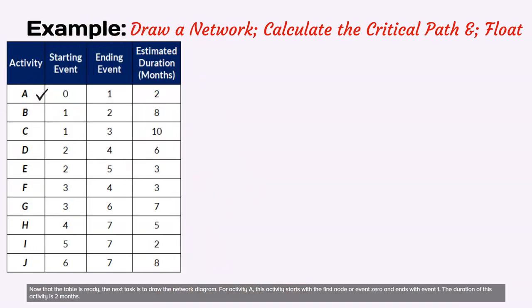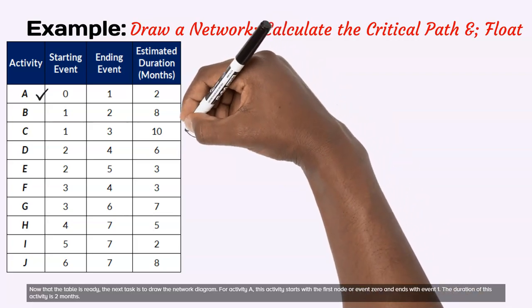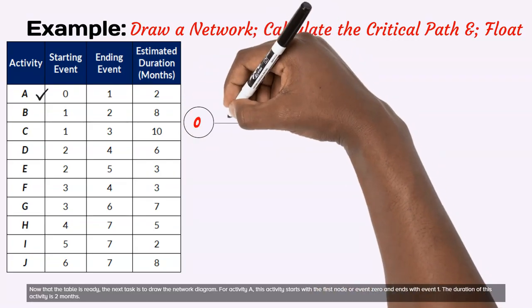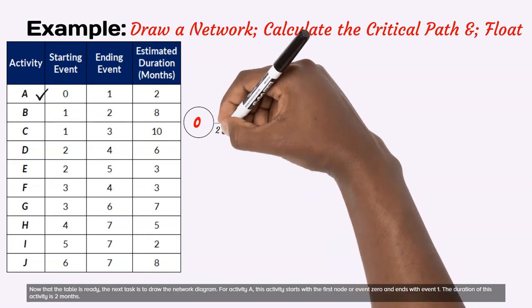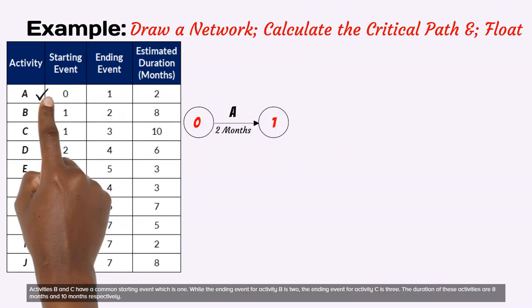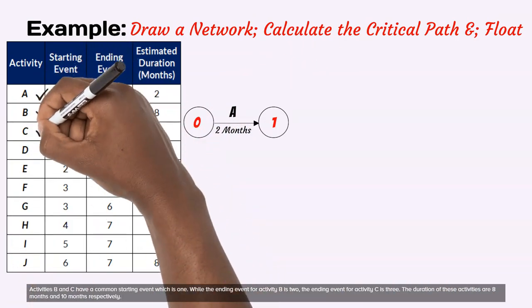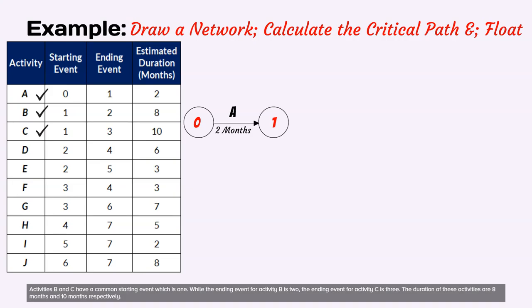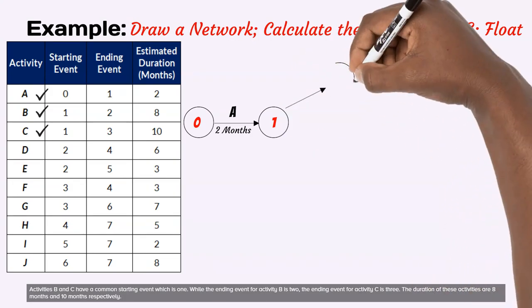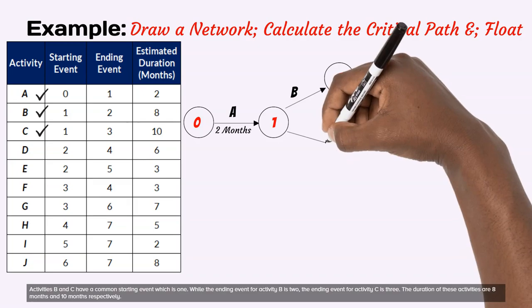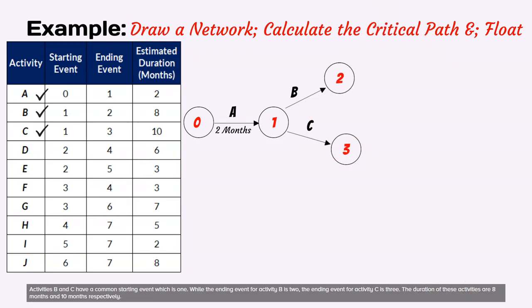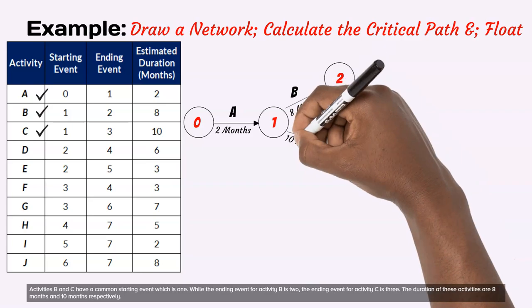For activity A, this activity starts with the first node or event 0 and ends with event 1. The duration of this activity is 2 months. Activities B and C have a common starting event which is 1. While the ending event for activity B is 2, the ending event for activity C is 3. The duration of these activities are 8 months and 10 months respectively.